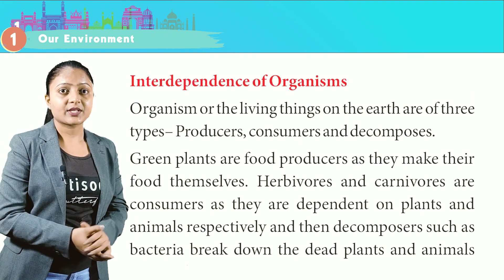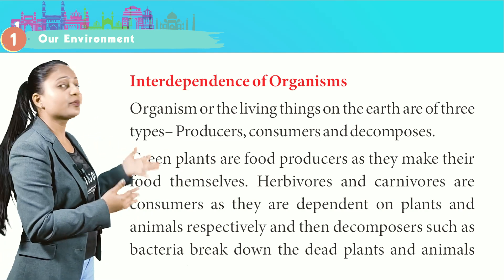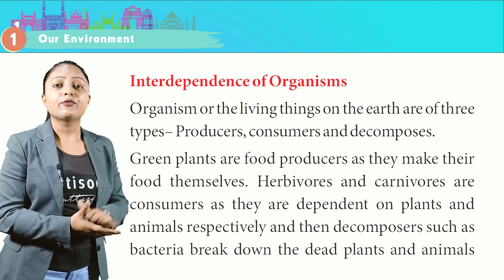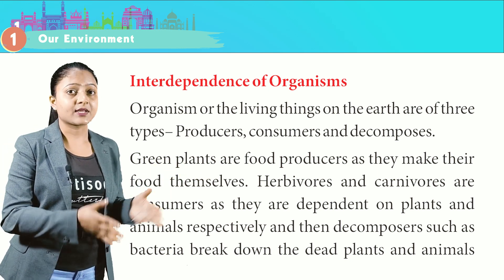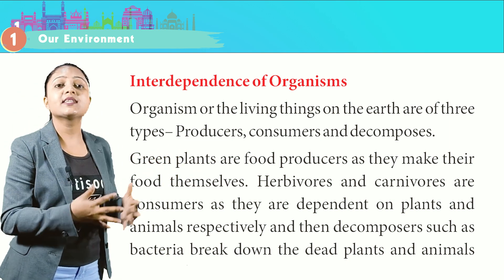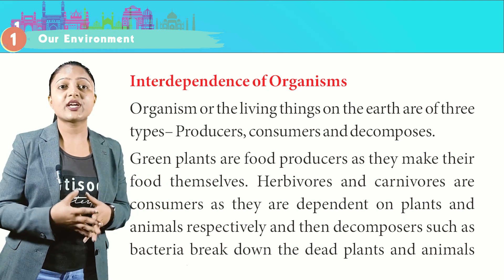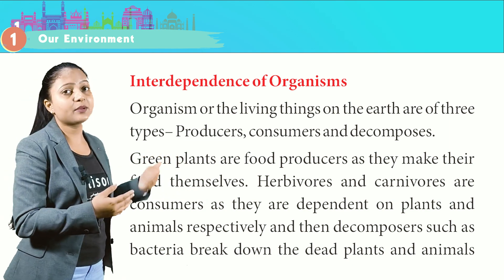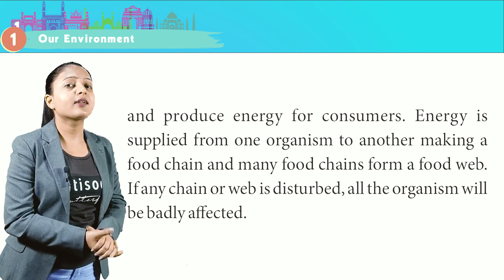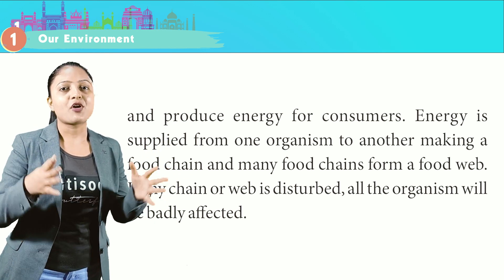Interdependence of organisms. Organisms on the earth are of three types: producers, consumers, and decomposers. Green plants are food producers as they make their own food. Herbivores and carnivores are consumers, dependent on plants and animals respectively. Decomposers such as bacteria break down dead plants and animals and produce energy.